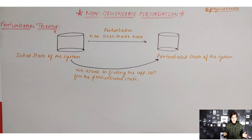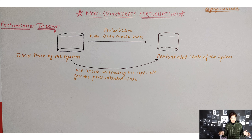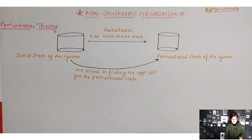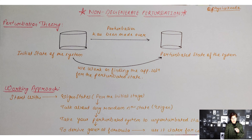In perturbation theory, we first work on finding the very initial state of a system before any perturbation was made to it — that is, before making any observation — because we know that in the quantum world observations alter the state of a system. Then we follow a set of procedures to obtain an approximate solution for the perturbed state.